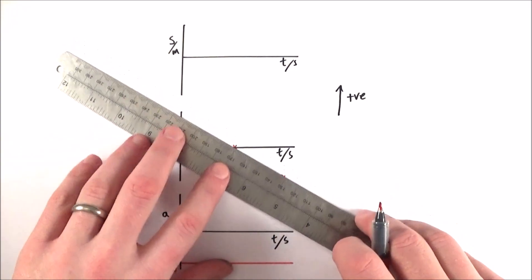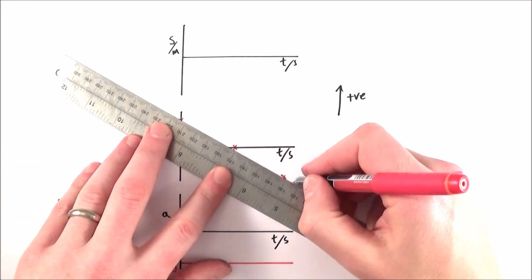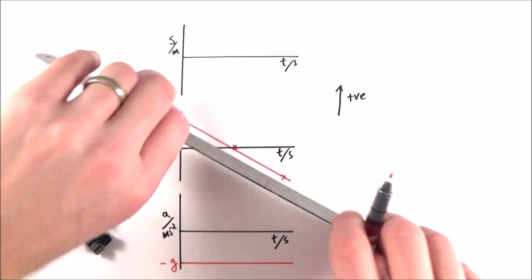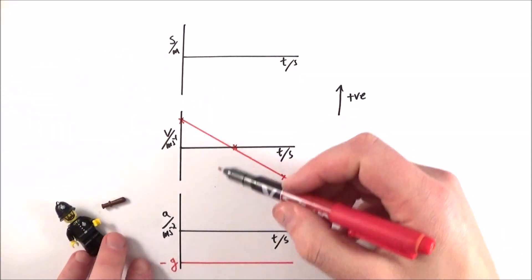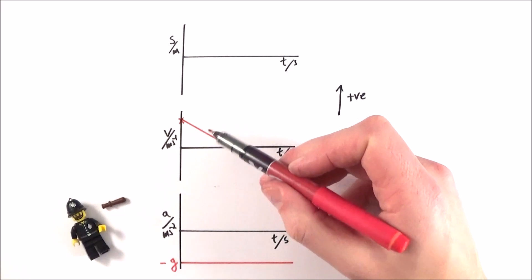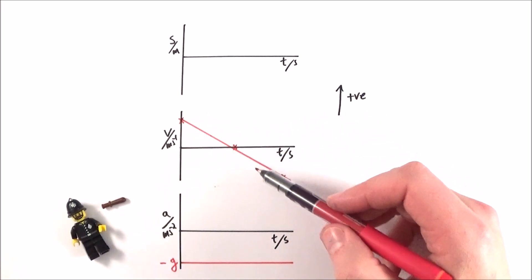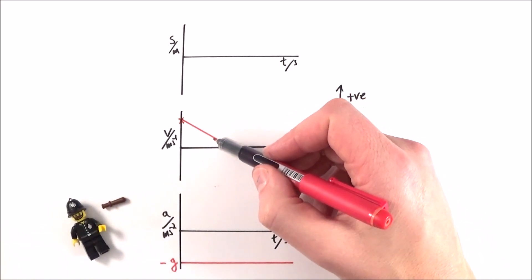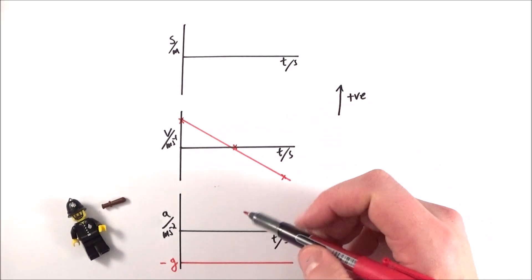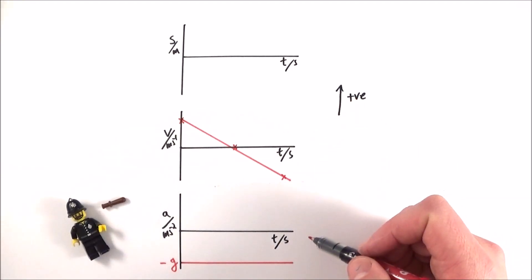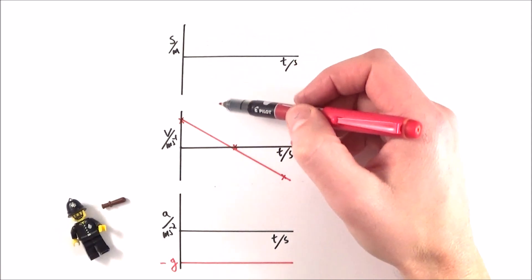So what I'm going to do is I'm going to say that during the course of its motion, the velocity time graph looks like this. It has a constant negative gradient, which means the velocity is always getting smaller and smaller and smaller. And if we compare the velocity to the acceleration underneath it, this graph here is really a graph of that gradient.